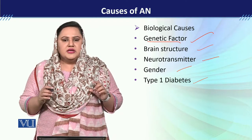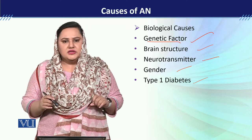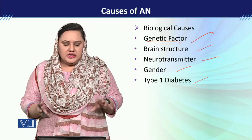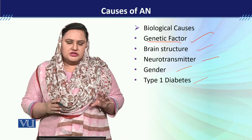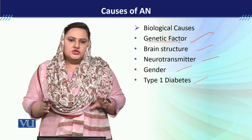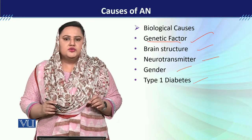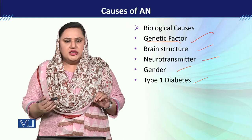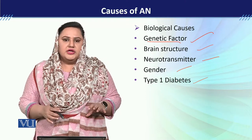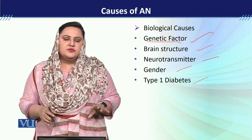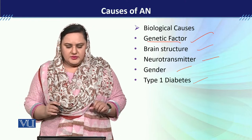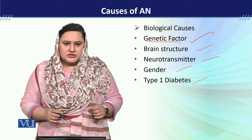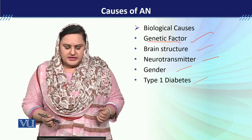Some studies also explain that there is at least 11 times greater risk in those people whose families have eating disorders running in them. Additionally, children who have eating disorders — their families also show a history of major depressive disorder. So genetic factors can be a reason for developing anorexia nervosa.